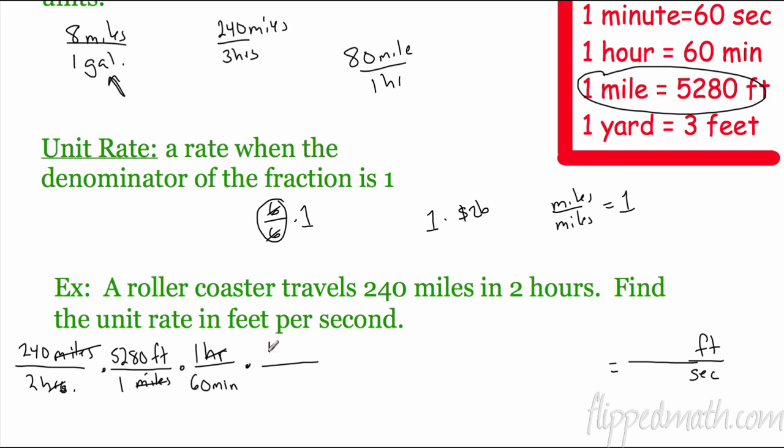If minutes is on the bottom, to cancel it out, I have to go on the top. 1 minute is equal to 60 seconds. So, I cross those out. And now, I notice on the bottom, I have seconds, which is what I want. So, now I can actually do the multiplication.